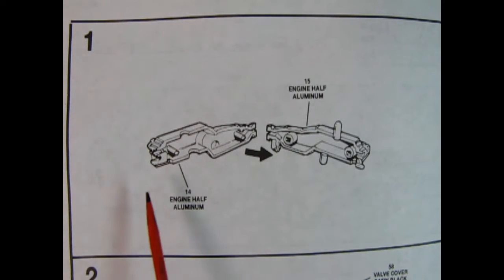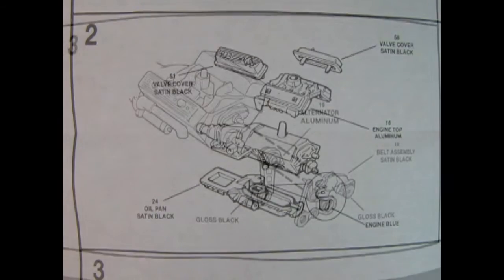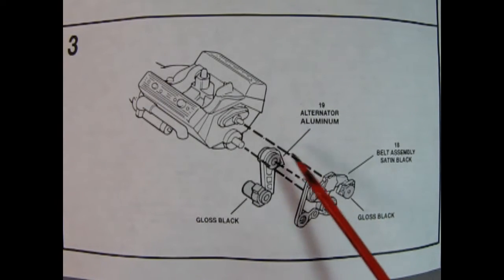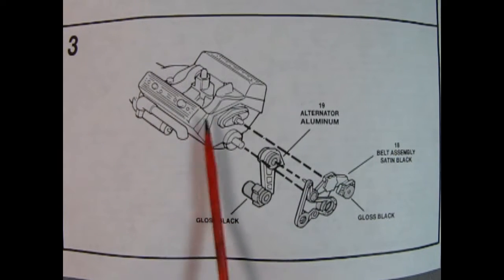So again with the Revell Monogram instruction sheets we get a lot of pictures but not too much going on. They could have done this in one image like the old Johan ones but whatever. So here we have our right and left hand side engine half with the transmission for step number one. In step number two we can see the top of the engine being glued on so this is our cylinder heads and our intake manifold. Then we've got our valve covers up here and our oil pan going on down there. It does say to paint the oil filter with the engine blue.